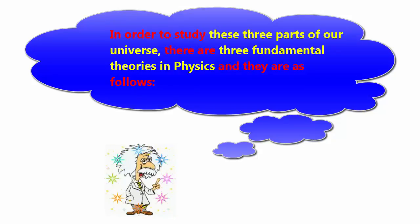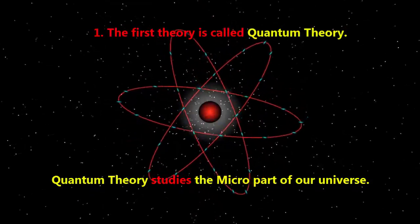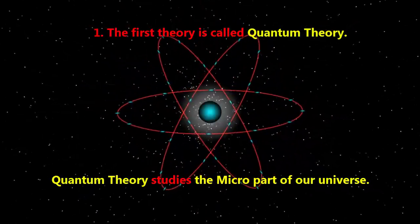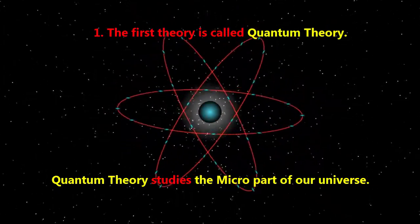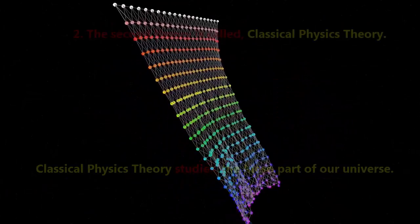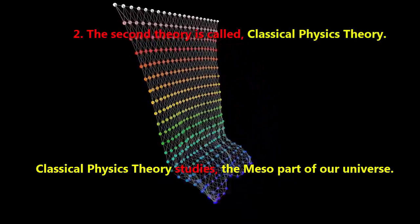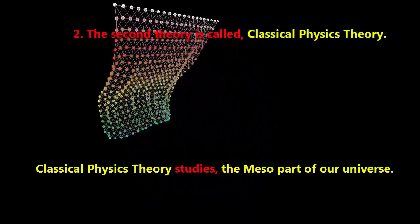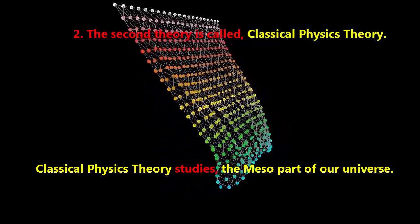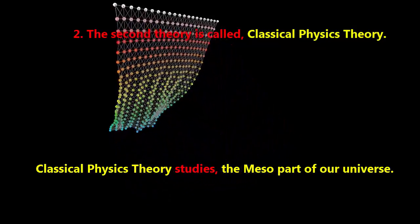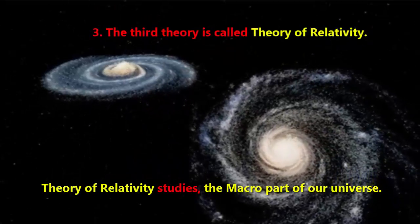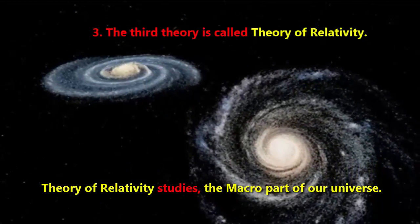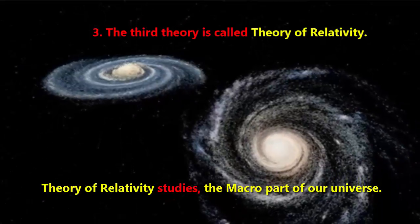In order to study these three parts of our universe, there are three fundamental theories in physics. The first theory is called quantum theory, which studies the micropart. The second theory is called classical physics theory, which studies the mesopart. The third theory is called the theory of relativity.